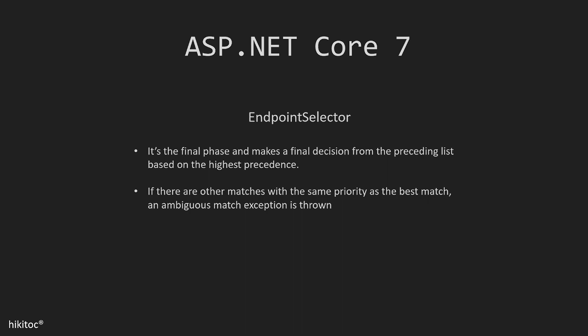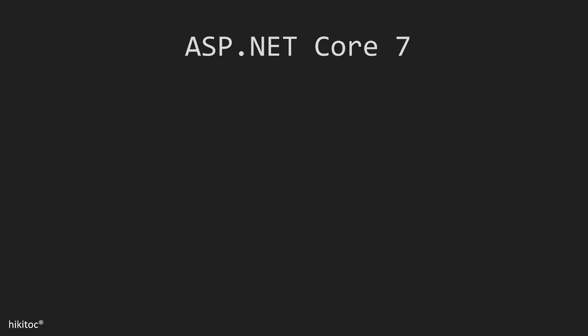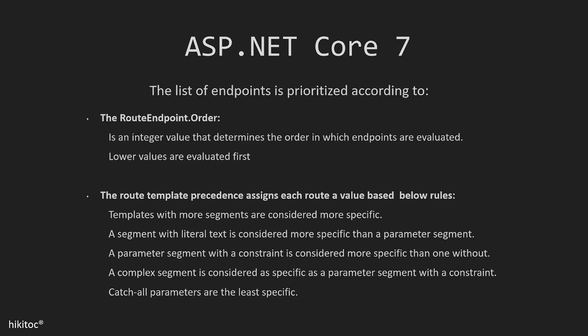Next comes the endpoint selector — the last step — which chooses the best option from the previous list using the highest priority. If there are multiple matches with the same importance as the best one, then an ambiguous match exception is thrown. The list of endpoints is prioritized according to the route endpoint order, which is an integer value that determines the order in which endpoints are evaluated. Lower values are evaluated first, to get to the highest priority as the final decision.